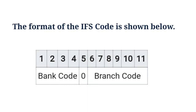The IFSC is an 11-character code. The first four alphabetic characters represent the bank name, and the last six characters represent the branch. The fifth character is zero and is reserved for future use. The IFSC code is used by NEFT and RTGS systems to route messages to the destination bank and branch.